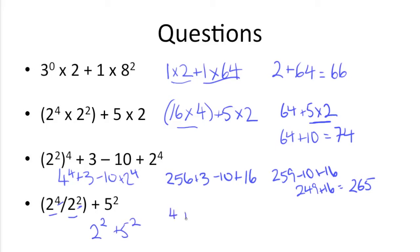2 squared is 4, 5 squared is 25, and that gets us 29.